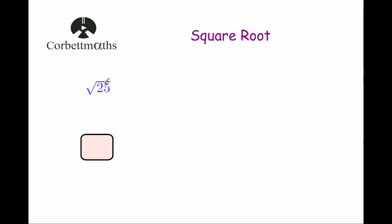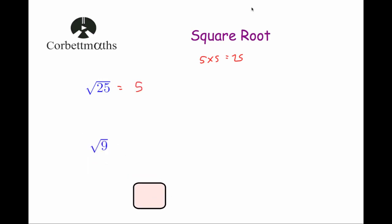We've got 25, that means the square root of 25. To find the square root of 25 we just need to think: what number will multiply by itself to give 25? Because 5 times 5 is equal to 25, that means whenever you multiply 5 by itself it gives 25, so the square root of 25 is equal to 5.